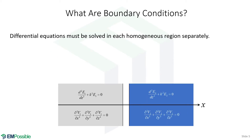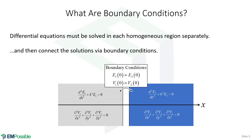So what do we do? We have to separate our problem into separate homogeneous regions. We'll solve the differential equations separately inside each homogeneous region, and then apply boundary conditions — which involve the function being continuous across the interface — to connect the solutions on either side and solve the overall problem. So anytime we need differential equations, we also need boundary conditions.